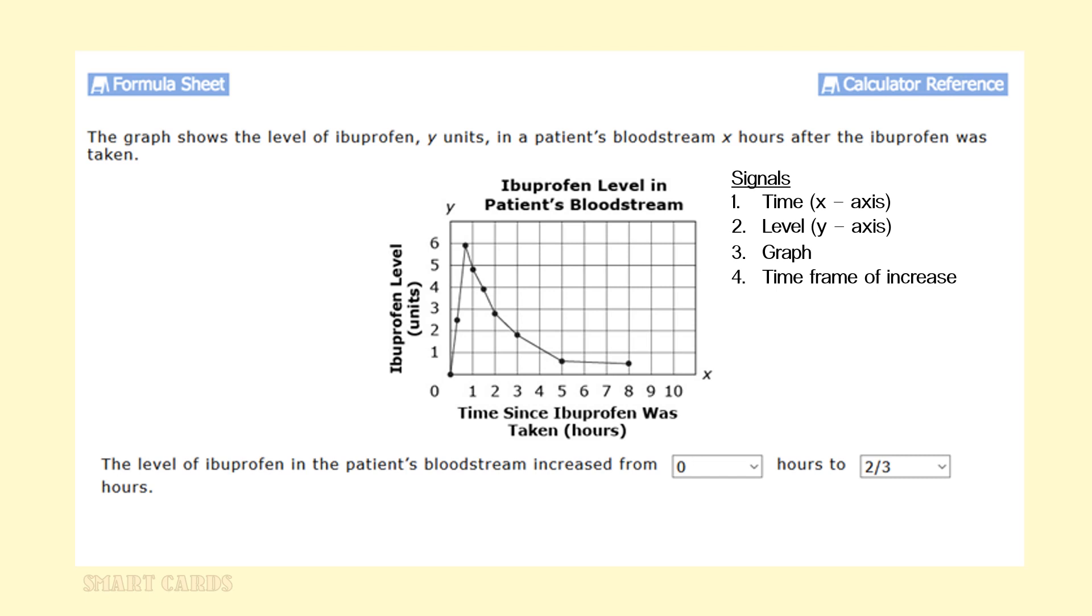Let's look at the solution. From zero hours to almost an hour later, the ibuprofen levels are increasing. After about an hour, the levels decrease. So our final answer will be, the level of ibuprofen in the patient's bloodstream increased from zero hours to two-thirds hours.